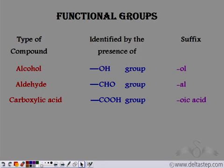We have seen the three functional groups. The alcohol group is identified by the OH group in the organic compound, and when we have this group, the suffix given is 'ol'. Similarly, when we have the aldehyde group, that is identified by the presence of a CHO group, we give the suffix 'al'. Similarly, when we have a carboxylic acid, which is identified by a COOH group, we give the suffix 'oic acid'.